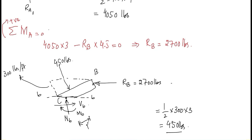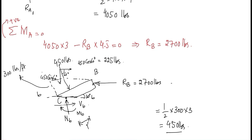To apply the conditions of equilibrium, all forces must act in either the x or y direction. The 450-pound force is not acting in the x or y direction, so we resolve it into its components. The x-component acts horizontally and the y-component acts vertically. Since the beam angle is 30°, the relevant angle here is 60°. The horizontal component is 450 cos 60° = 225 pounds, and the vertical component is 450 sin 60° = 389.72 pounds.